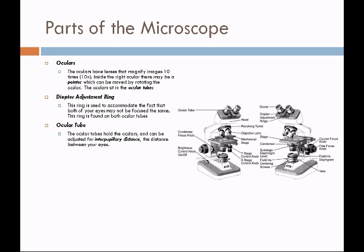The ocular tube houses the lenses and must be adjusted for interpupillary distance. Because this is a binocular microscope, everybody's distance between their eyes is a little different. I'll show you in lab how to adjust these so that you see a single image rather than two distinct images. The head is the top part of the microscope. It contains a delicate prism system which helps send an image to the oculars and your eyes. This image is actually going to be inverted.